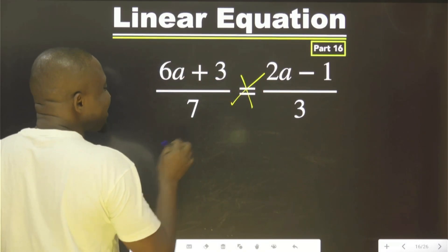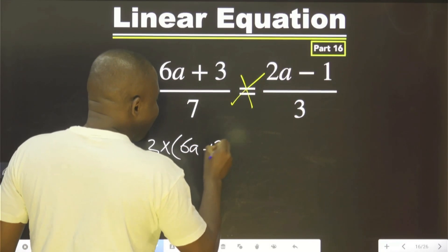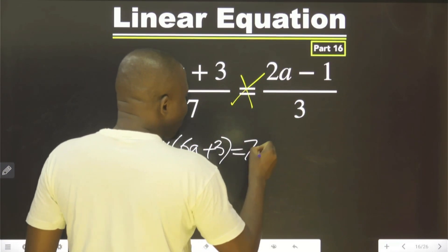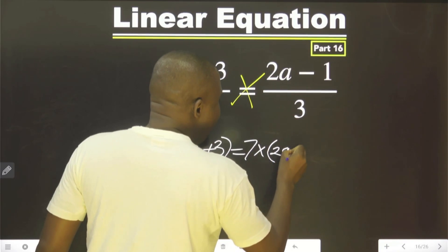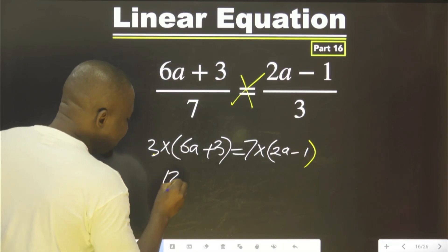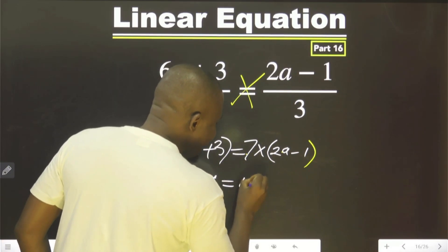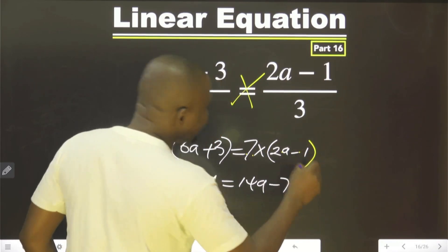Meaning, whatever is here multiply by this. That is 3 multiplied by 6A plus 3 equals to 7 multiplied by 2A minus 1. This multiplied by this will give us 18A, this will give us 9, this will give us 14A, this will give us 7.